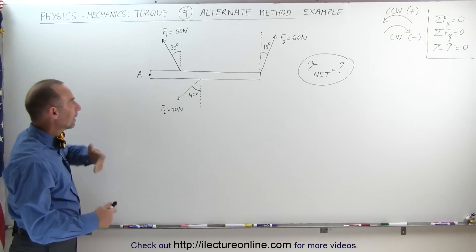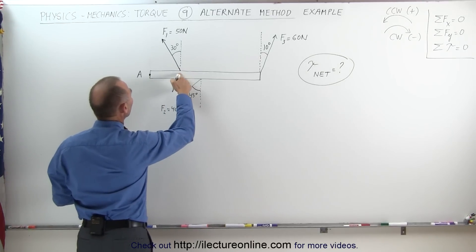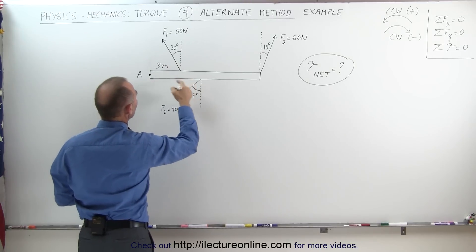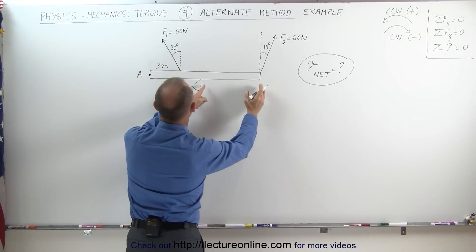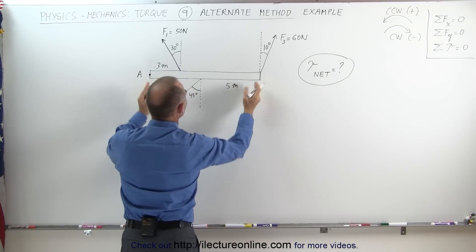Here we have a beam with a certain length. The distance from point A to where force 1 is acting is 3 meters. From there to the next point is 5 meters, and this is another 5 meters, making a total distance of 10 meters.